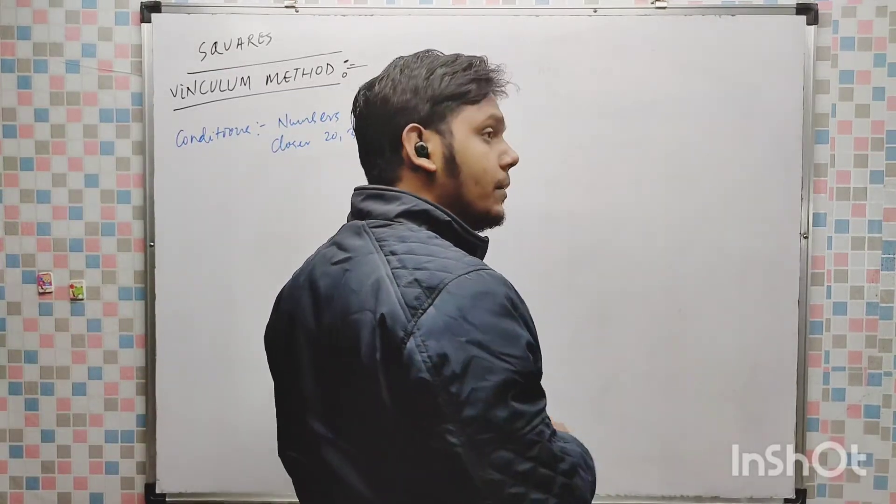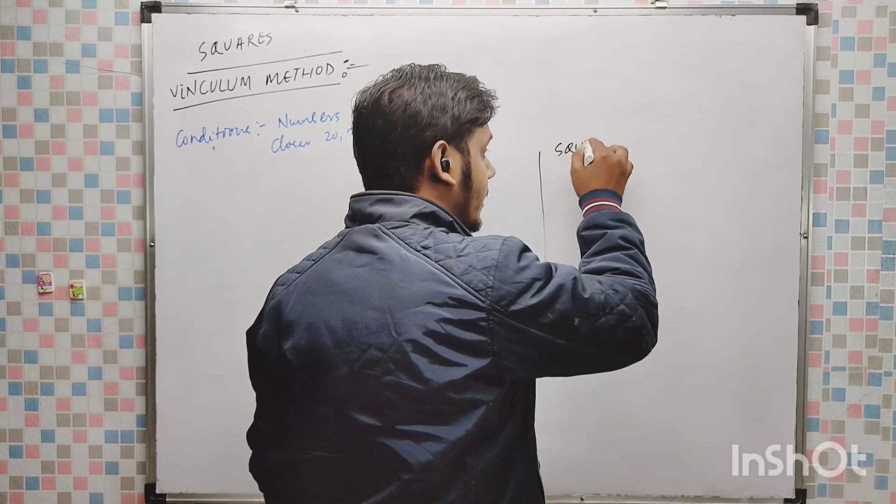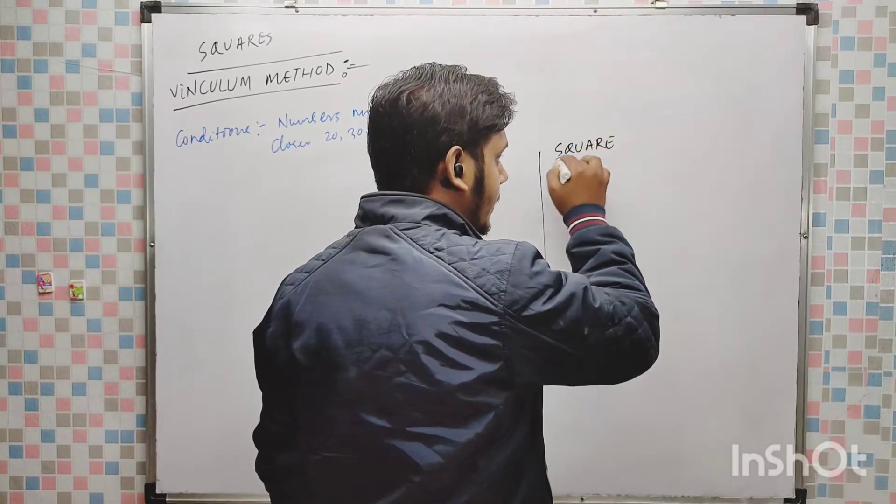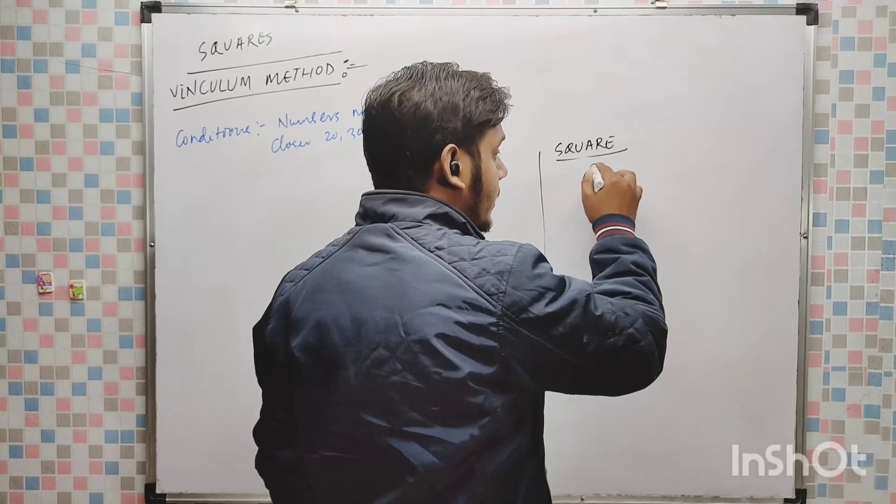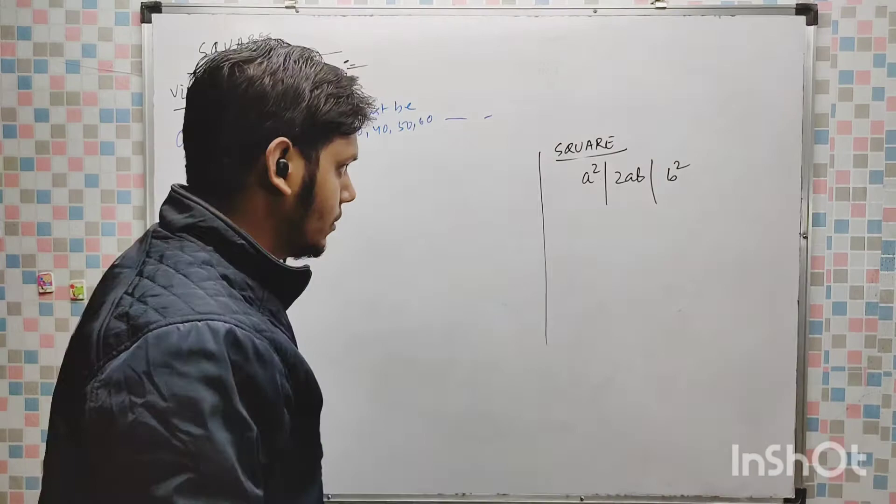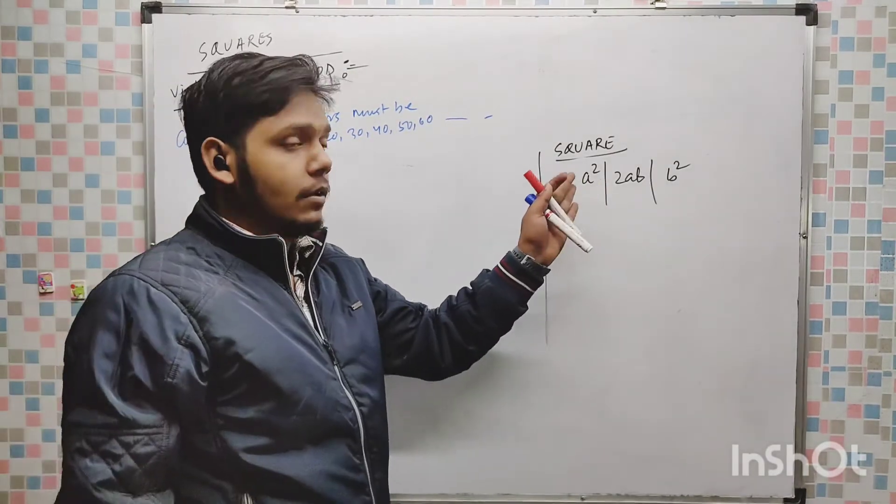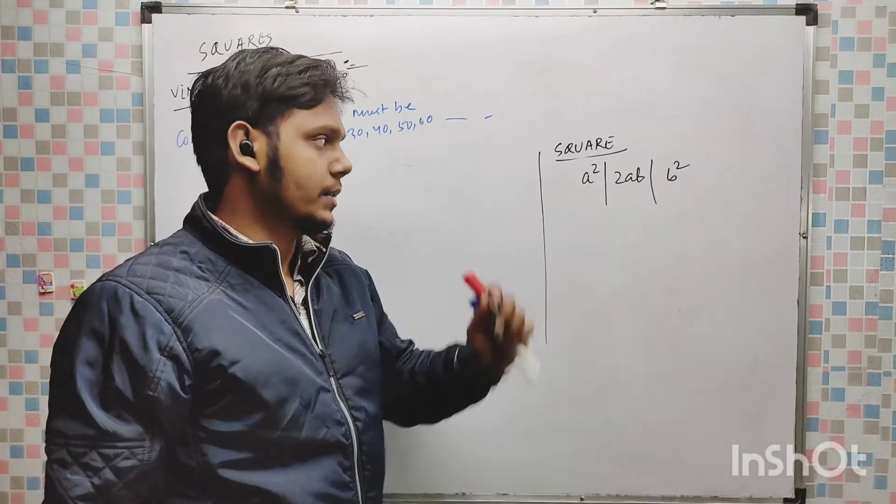Now let me clear you first what is the squaring technique we have read, that a² + 2ab + b², this is the technique we have learnt from the past.